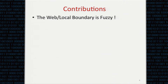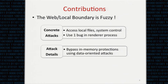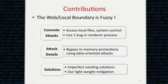Our contributions of this work are as follows. First, we present concrete attacks to achieve goals such as accessing local files and obtaining system control, using only one bug in the renderer process. Second, we introduce several interesting techniques to bypass the in-memory protections in Chrome to achieve our goals. Lastly, we discuss existing solutions, which are complete but may introduce non-negligible performance overhead, and we also propose our lightweight mitigation that can be immediately implemented to mitigate our attacks.